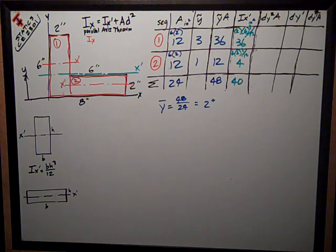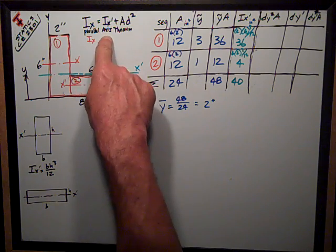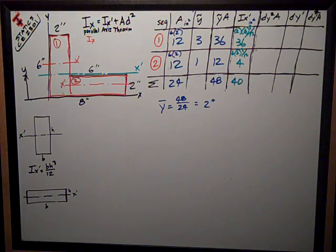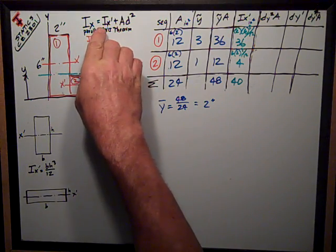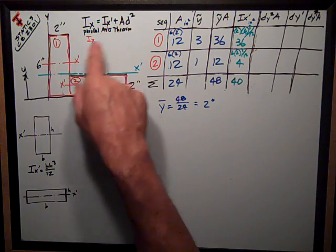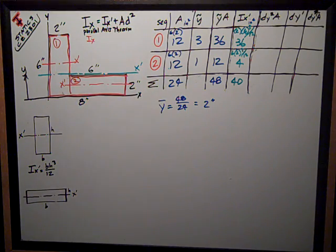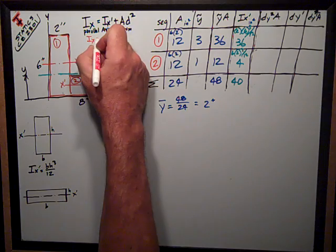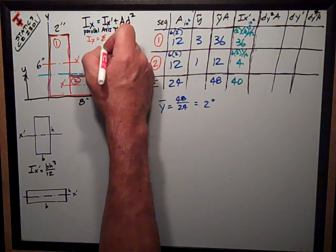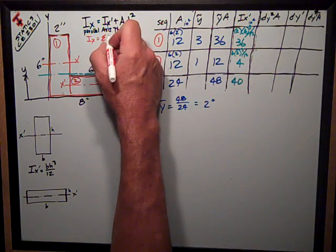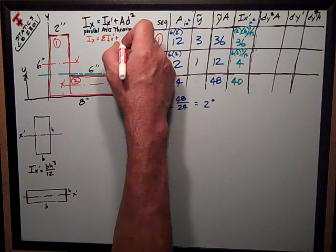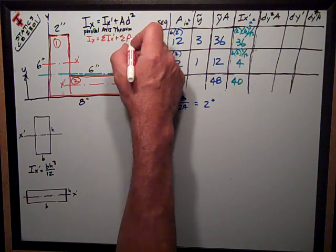Now I'm using the parallel axis theorem which says the moment of inertia about any axis, in this case the x-axis, is equal to its moment of inertia about each part and piece, the moment of inertia about its own centroidal axis, ix-prime, that's the column I just did right there, plus the sum of the ad squared terms.